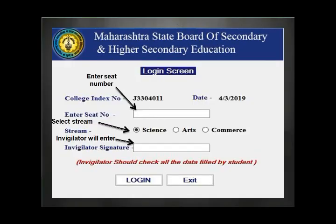As soon as the login screen appears, you have to check the index number of your college and the date of examination. You are supposed to enter the stream and seat number on your own — science students select science, art students select art, commerce students select commerce. Then there is an invigilator password: your supervisor will come to your desk, verify your hall ticket, and put their password to start the login.